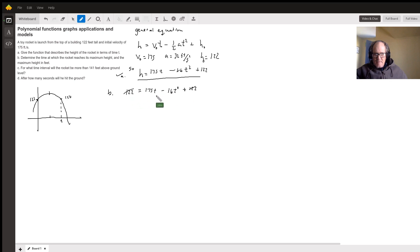This cancels, this cancels. I get zero. So this T can come out, and I get 175 minus 16T. Set both of those equal to zero, and you'll get this answer is zero. This answer is 10-point-something.